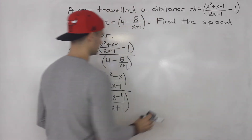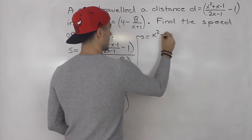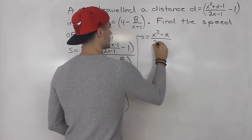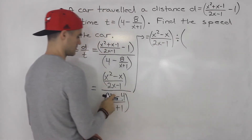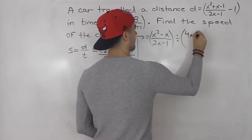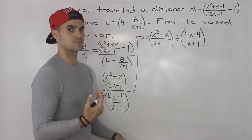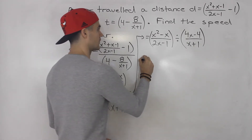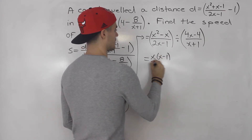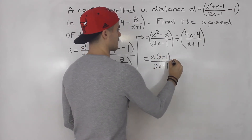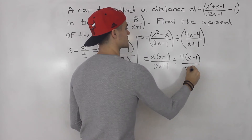Now let's rewrite the full division: x squared minus x over 2x minus 1, divided by 4x minus 4 over x plus 1. To simplify, we first factor everything. The numerator x squared minus x factors as x bracket x minus 1, over 2x minus 1. Then 4x minus 4 factors as 4 bracket x minus 1, over x plus 1.